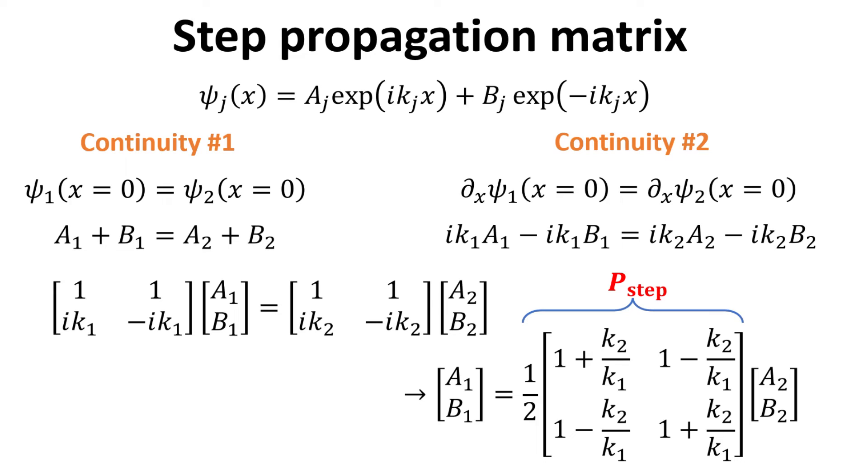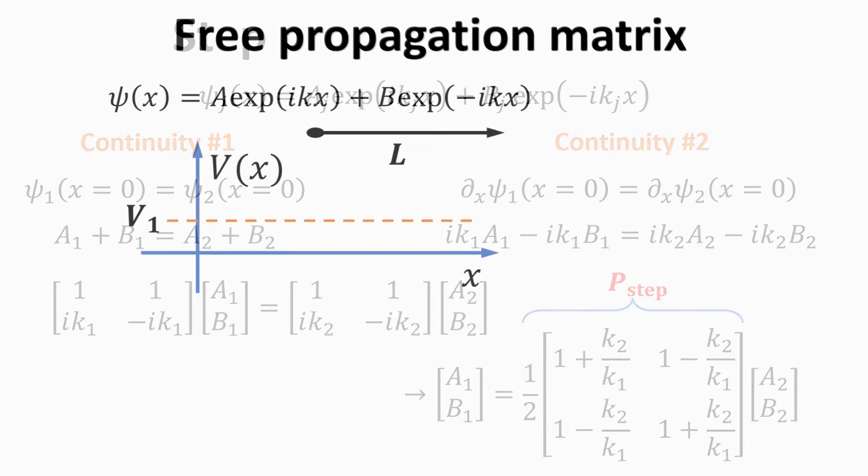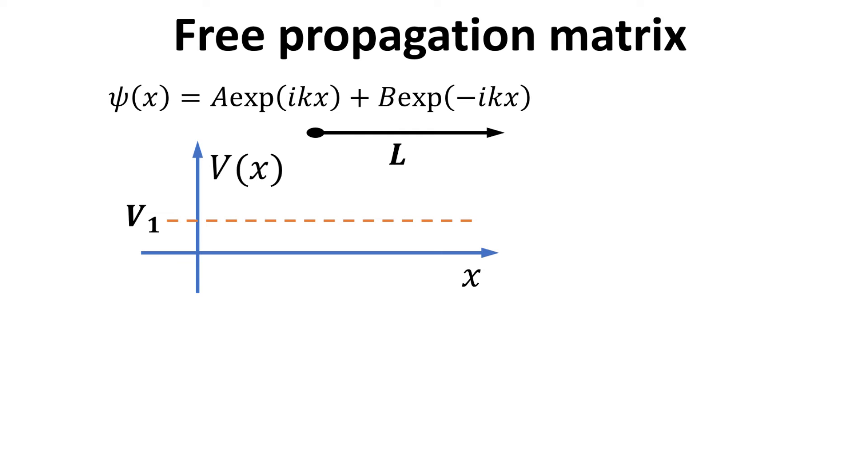With simple algebra, we can express the scattering amplitudes vector in region 1 in terms of the product of a 2 by 2 matrix with the scattering amplitudes vector in region 2. We call this 2 by 2 matrix the step propagation matrix. We see that the step propagation matrix contains only the wave vectors k1 and k2. So, we have managed to describe how the scattering amplitude vectors transform upon scattering with an abrupt potential step.